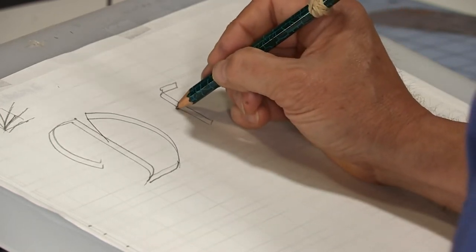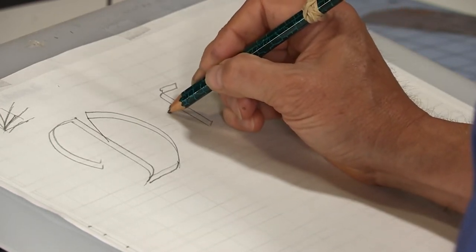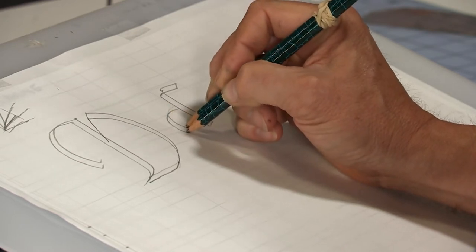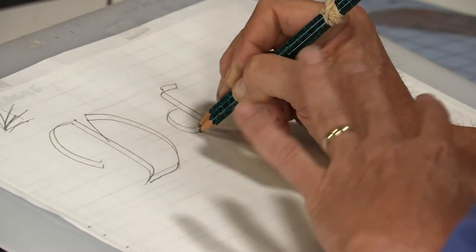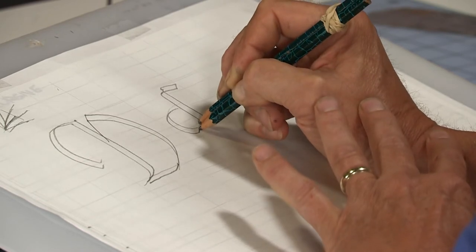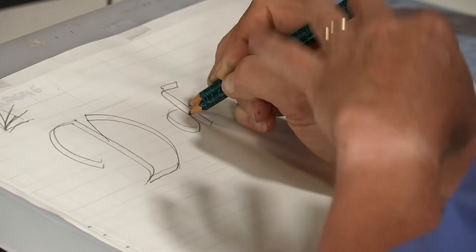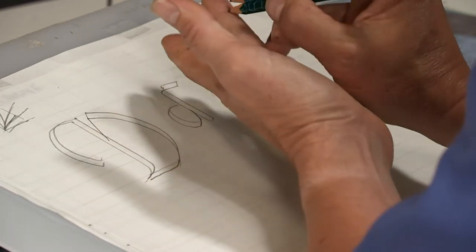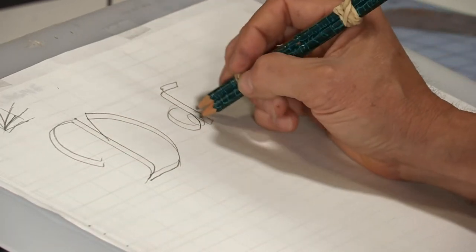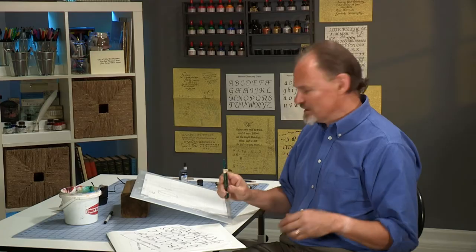And then I begin the loop of the letter D. Nice and relaxed, come down to the bottom and start going up and at this point, I start lowering my wrist so that my pen comes up in that wheelie position, I call it. It's only touching on that bottom corner so that this line right here is nice and discreet, nice and thin.